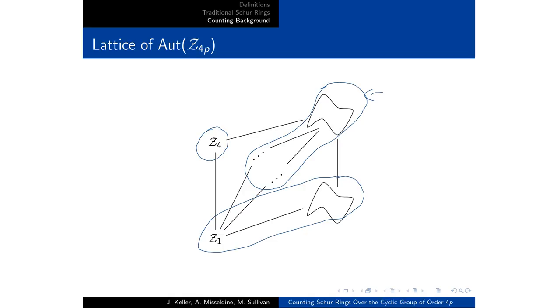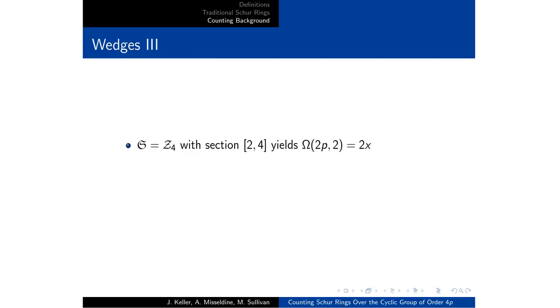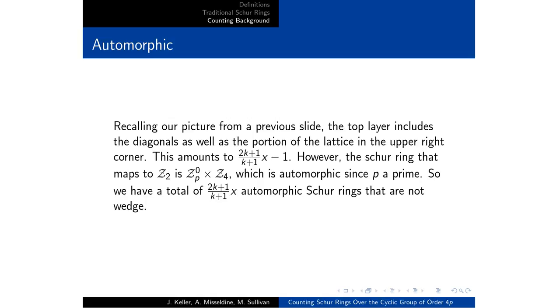So this is more in-depth in Max's talk, but this corresponds to the diagonal subgroups. And with our calculation of the diagonal subgroups, that portion of the lattice is 2k plus 1 over k plus 1x minus 1.